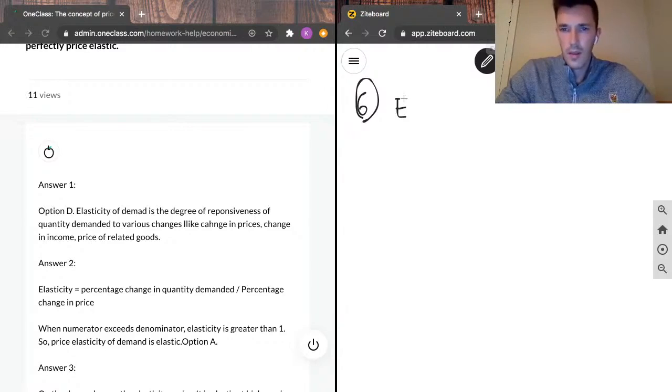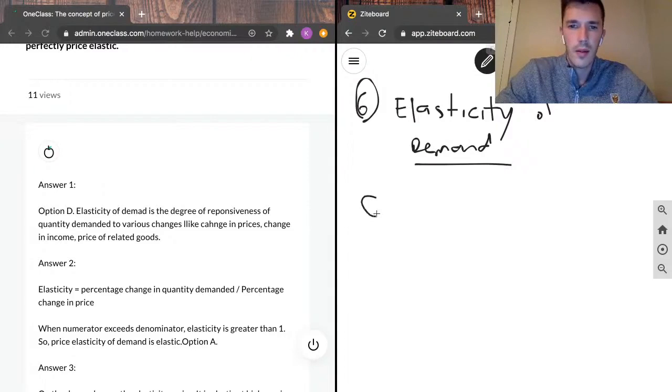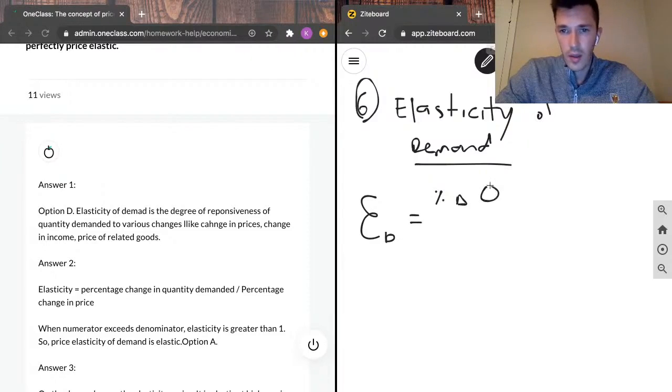Write out elasticity of demand. And the formula for that, we use kind of the backwards E, I believe it's Latin, elasticity of demand. And it is going to be the percent change in quantity demanded.